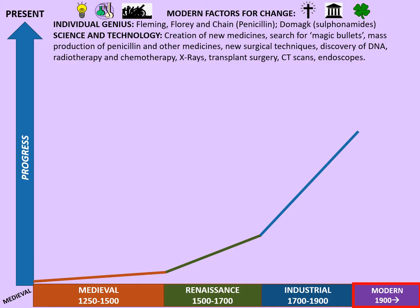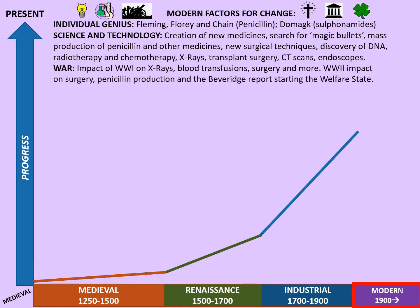Science and technology is a big one in the modern period: creation of new medicines, the search for magic bullets, mass production of penicillin and other medicines, new surgical techniques, discovery of DNA, radiotherapy, chemotherapy, x-rays, transplant surgery, MRI scans, CT scans, endoscopes — it's just about endless when you look at the science and technology contribution to the 20th century and beyond. War is also important: World War I had an impact on x-rays, blood transfusions, and surgeries, while World War II had a similar impact on surgery but also helped ramp up penicillin production.